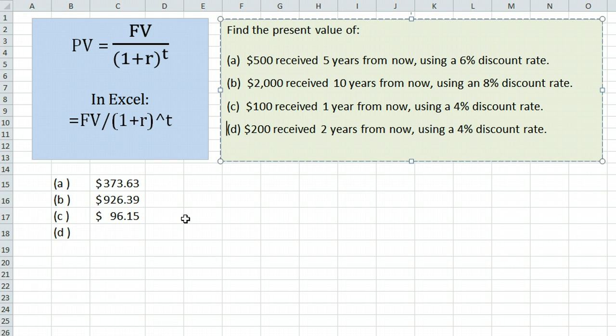The last example here, $200 received two years from now using a 4% discount rate: equals the future value, $200, divided by 1 plus 4%, 0.04, raised to the 2 for two years from now. $184.91.